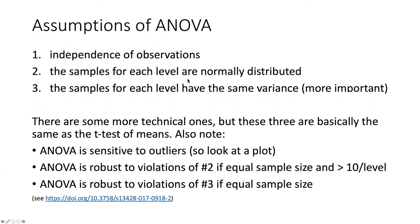The assumptions of ANOVA should look familiar because they are very similar to the assumptions for the t-test of means. One is that the observations we make are independent of each other and not correlated. The other two assumptions are also familiar: the samples for each level should be normally distributed — in this case, it means the residuals are normally distributed — and also the homogeneity of variance assumption, that the samples for each level or group have the same variance.